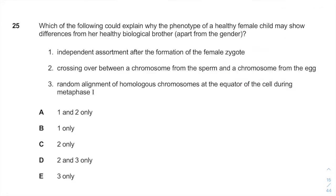Hey guys, welcome back. It's Ari from www.entermedsco.com. Today we are going to solve question number 25 of IMA 2018: Which of the following could explain why the phenotype of a healthy female child may show difference from a healthy biological brother?